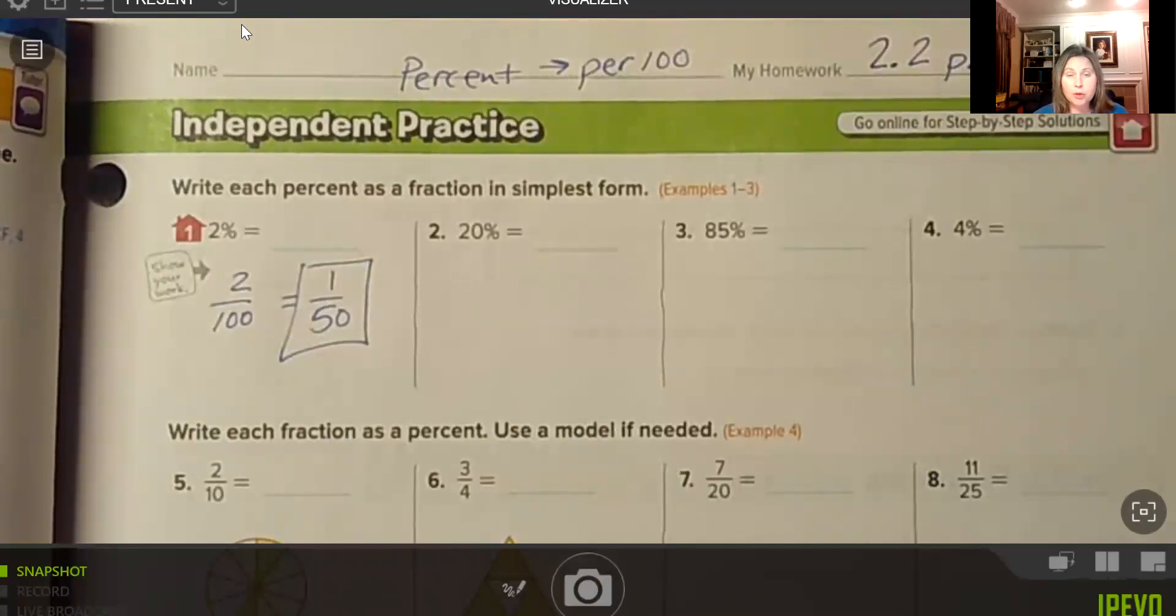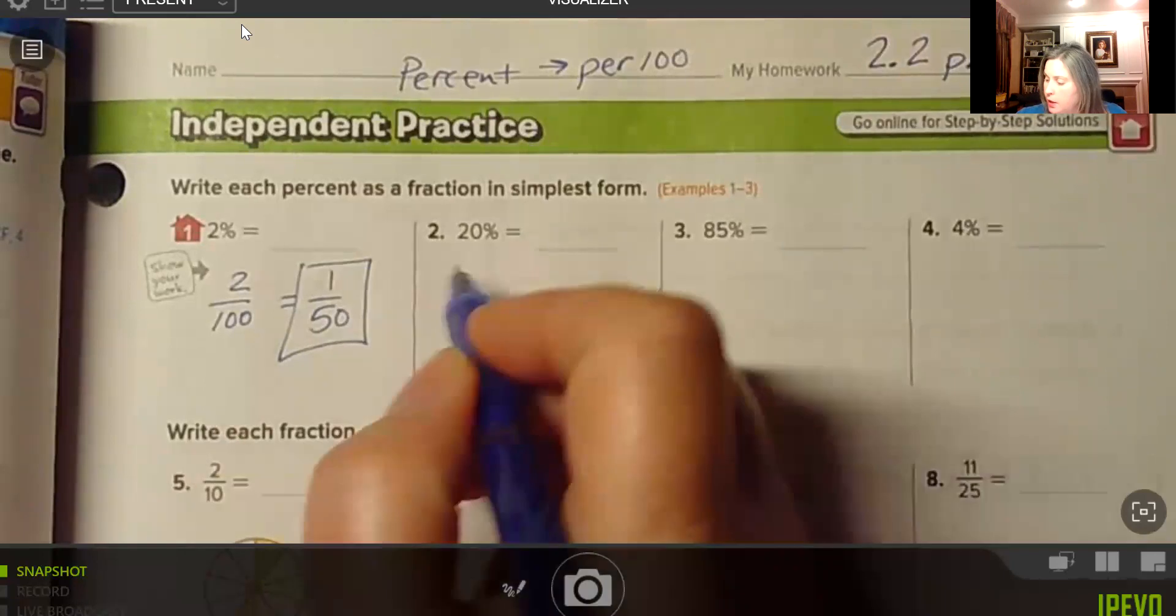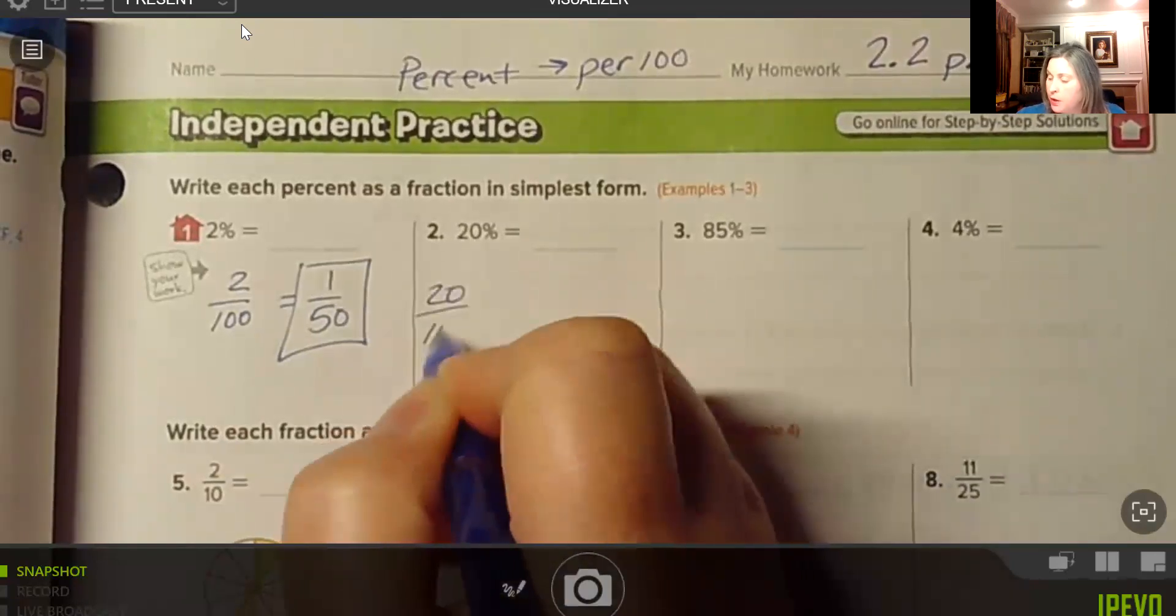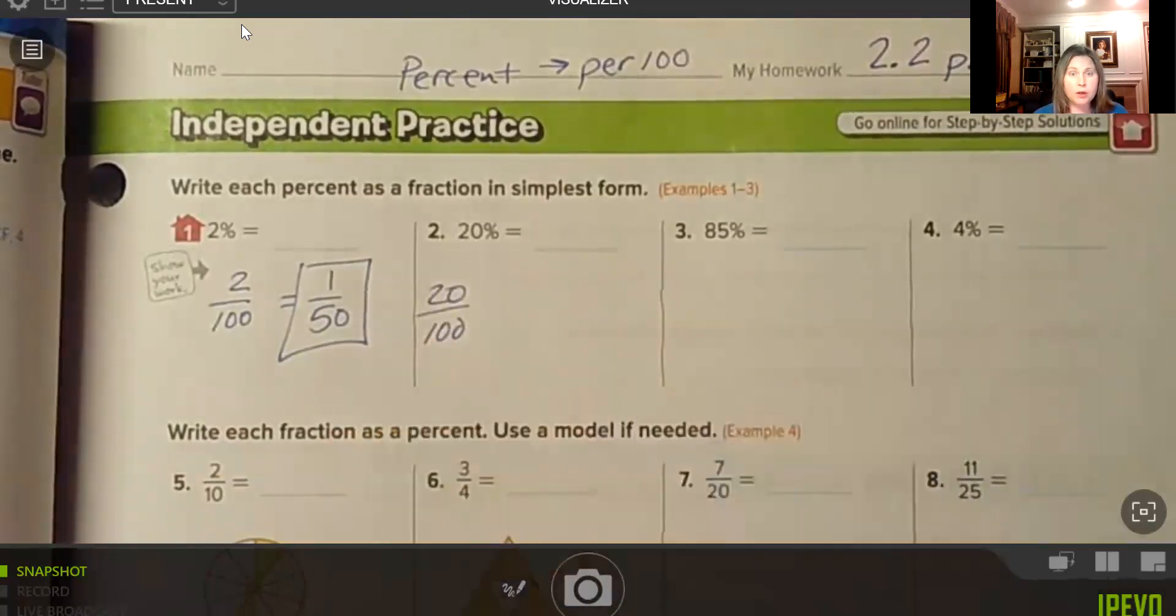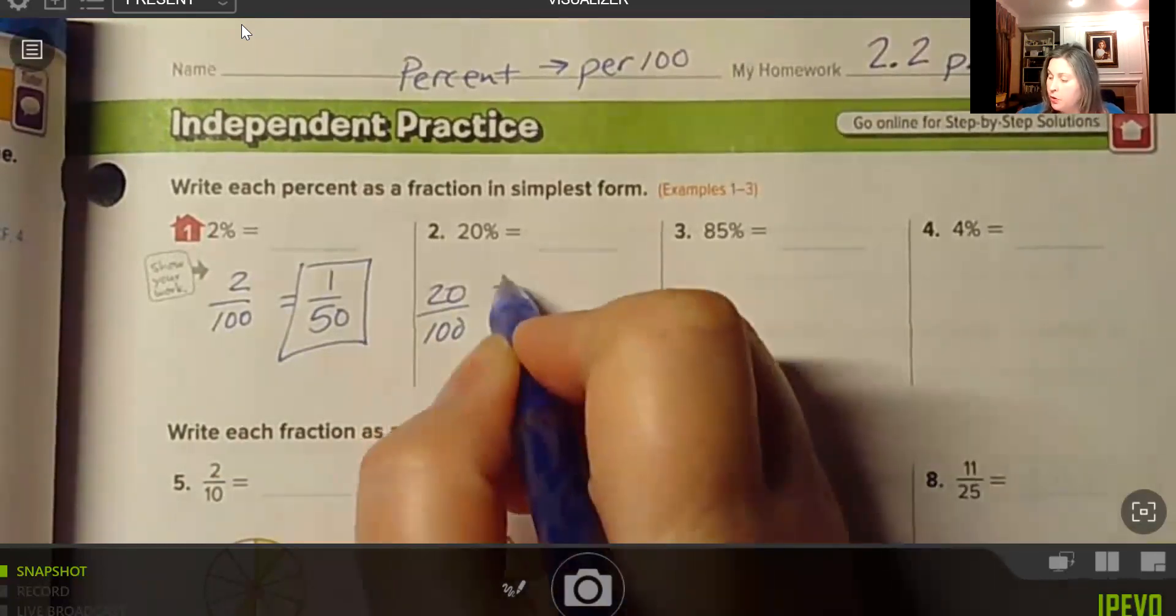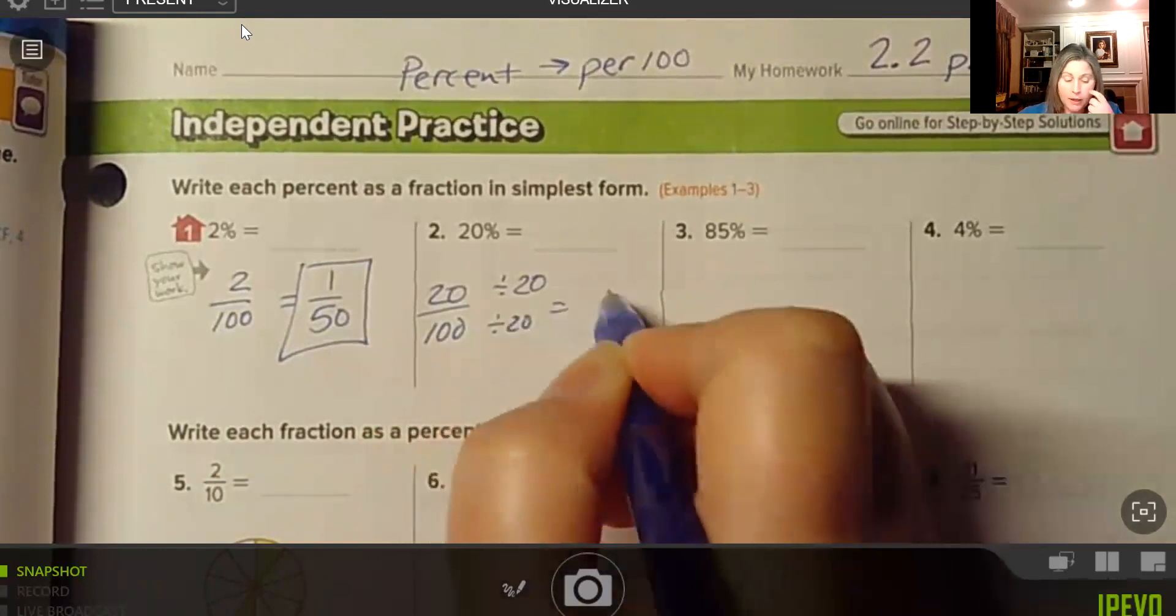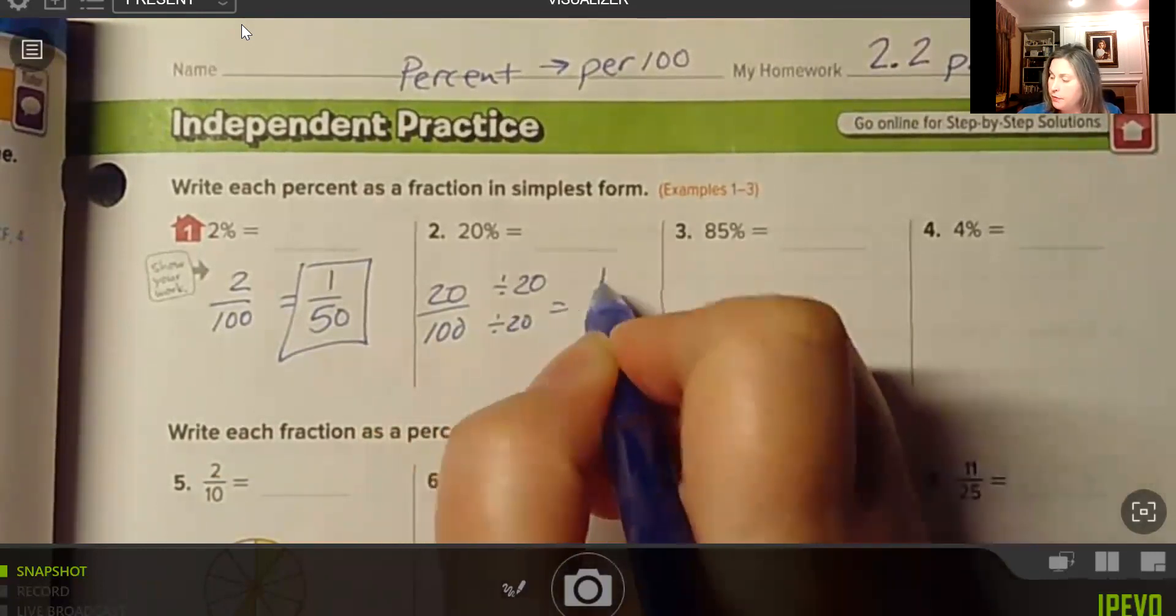Number 2, we have 20%. That means 20 per hundred. And then we know that 20 and 100 have a greatest common factor of 20. So we can divide the numerator and the denominator by 20 to get 1/5.